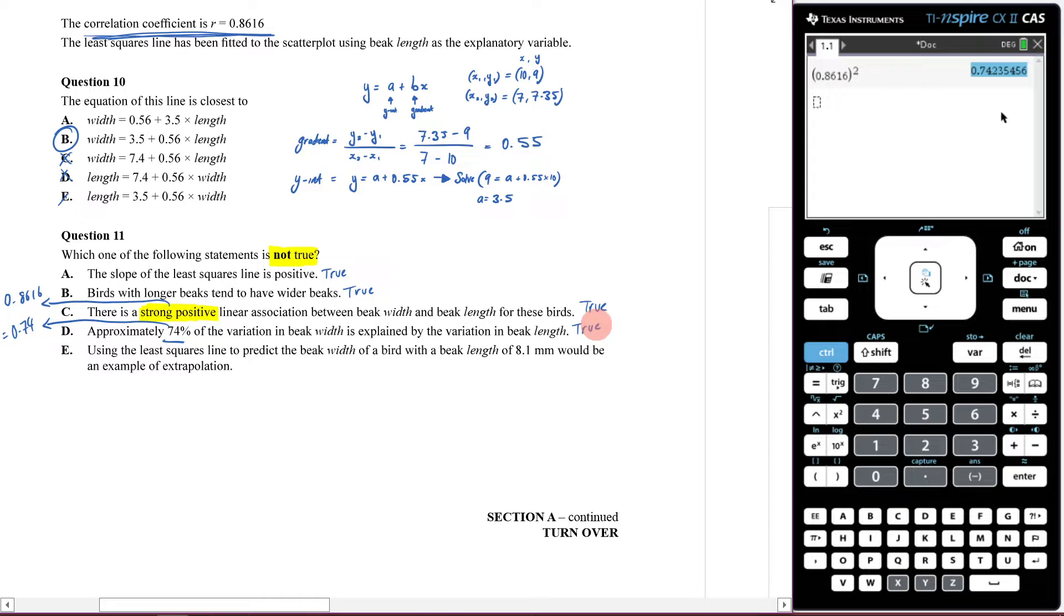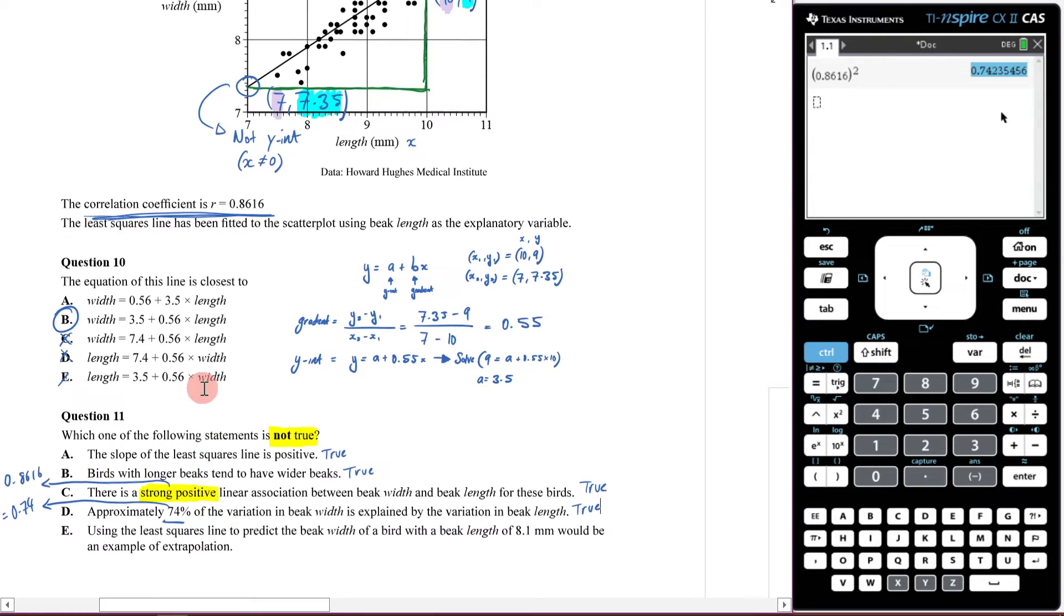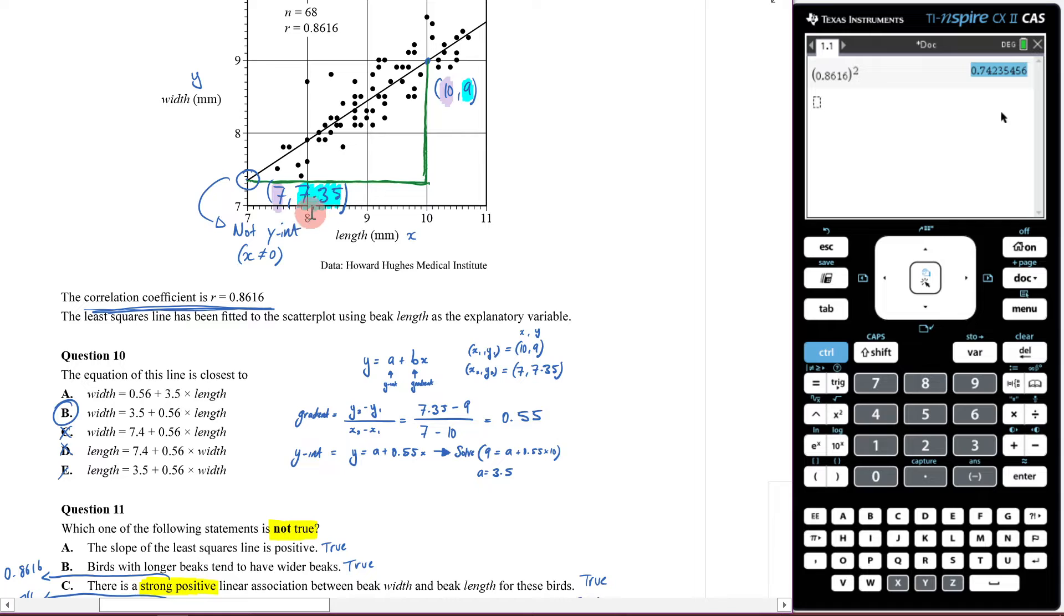That means E has to be the false statement. It says using the least squares line to predict the beak width of a bird with a beak length of 8.1 millimeters would be extrapolation. But looking here, 8.1 is within the data range.